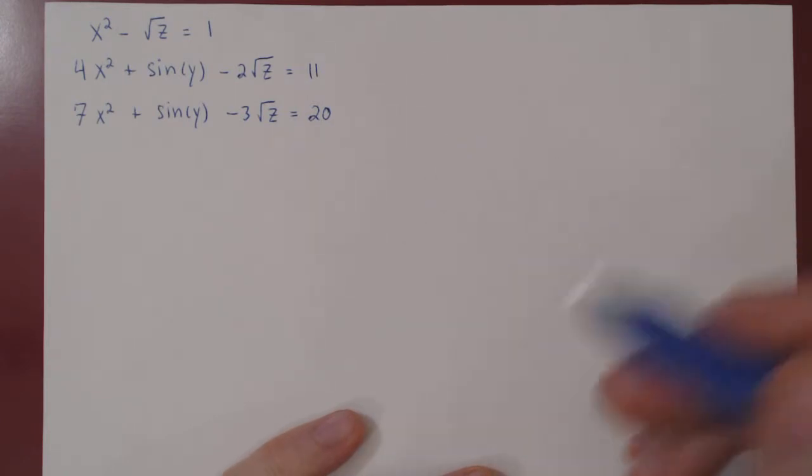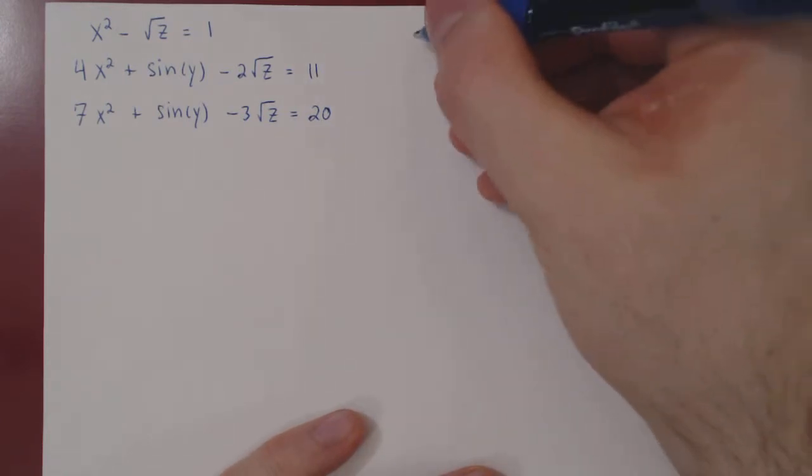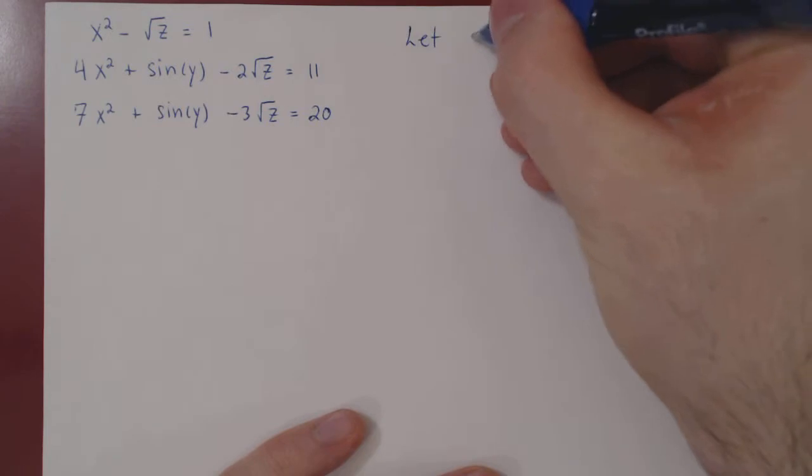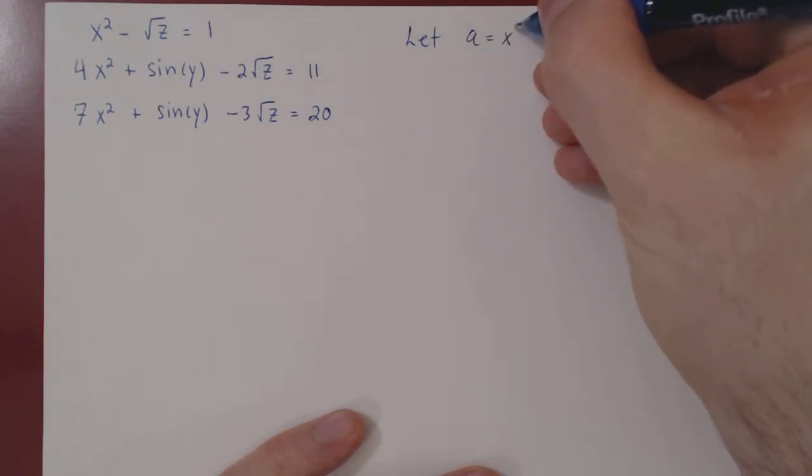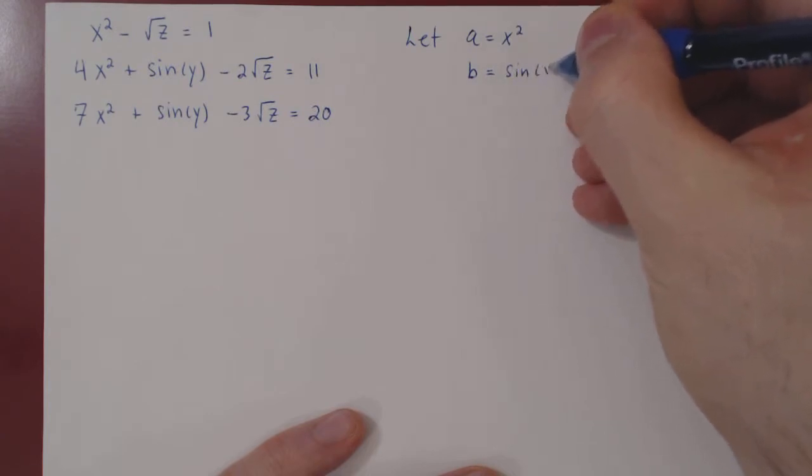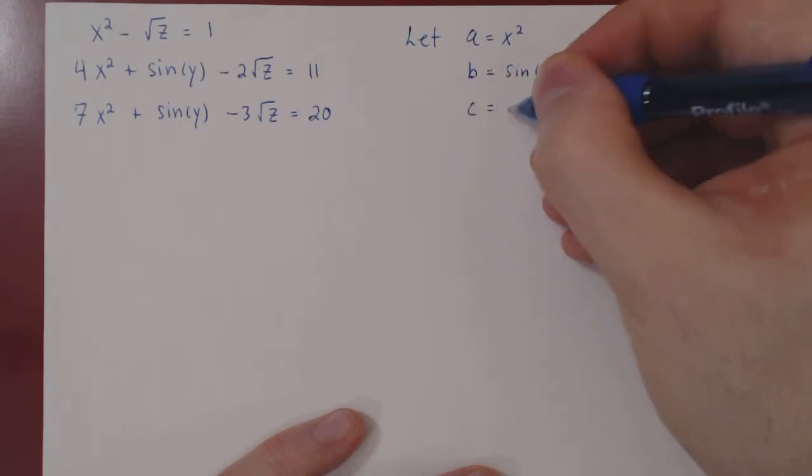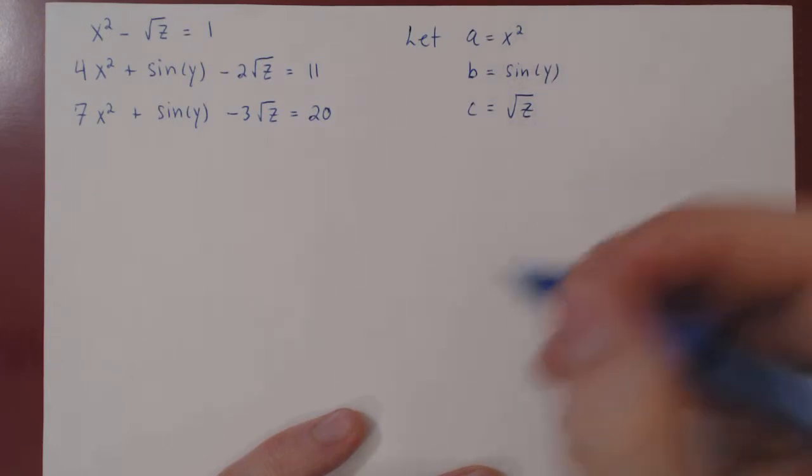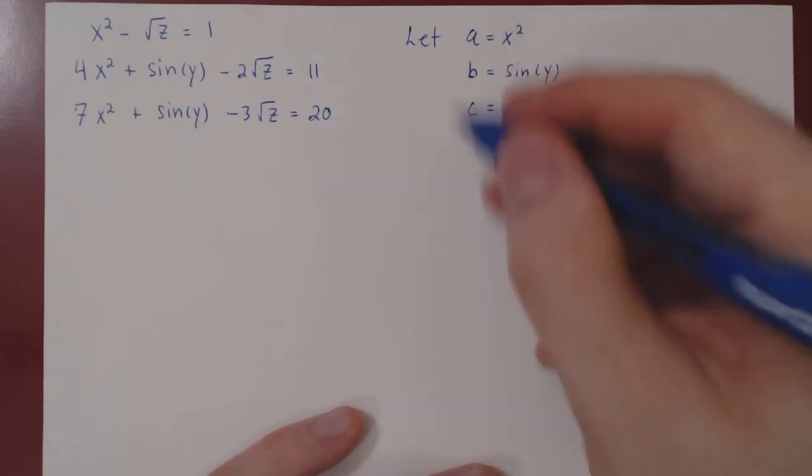All we can do is make a change of variables. We can let a be x squared, b equals sine of y, and c equals root of z. Let's see what happens after this change of variables.